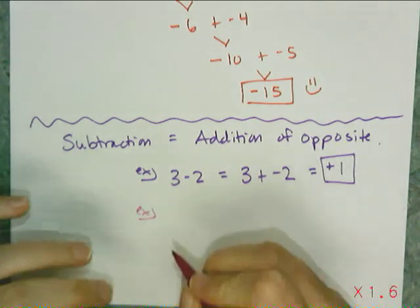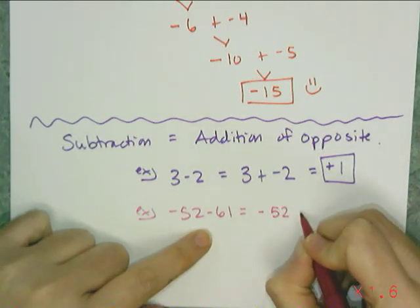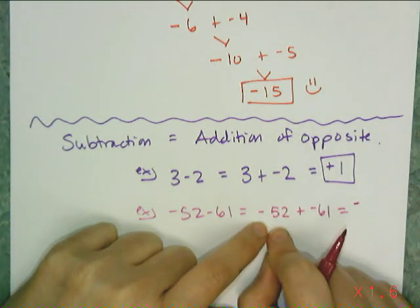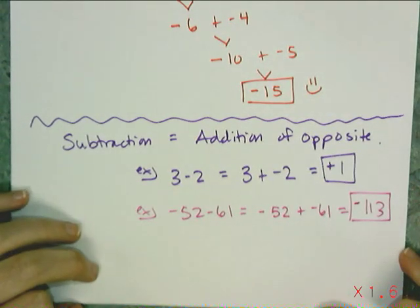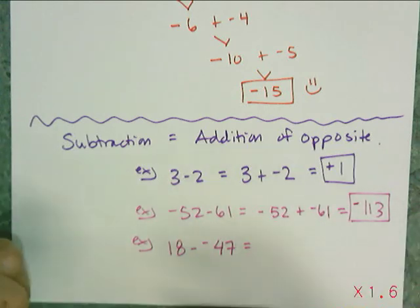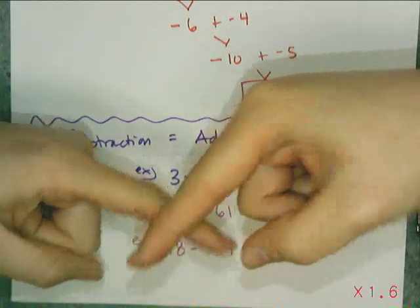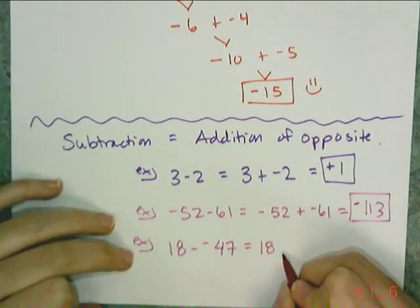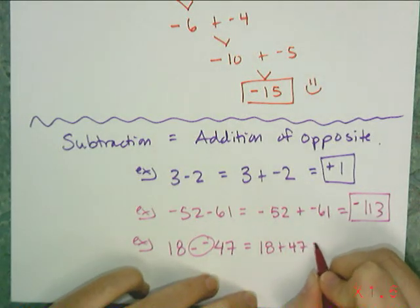Let's look at a non-trivial example, like negative 52 minus 61. When I see this, I think that's really the same thing as negative 52 plus negative 61, and then I just follow the addition rule. I know the final answer has to be negative, and I add 52 and 61 to get negative 113. And for the ones that cause the most trouble — when I see two negative signs together — I simplify the signs and let them come together to make a plus. Minus a negative becomes a plus, because by the definition of subtraction, if I subtract a negative, it's the same as adding a positive. So 18 minus negative 47 is rewritten as 18 plus 47, which is 65.